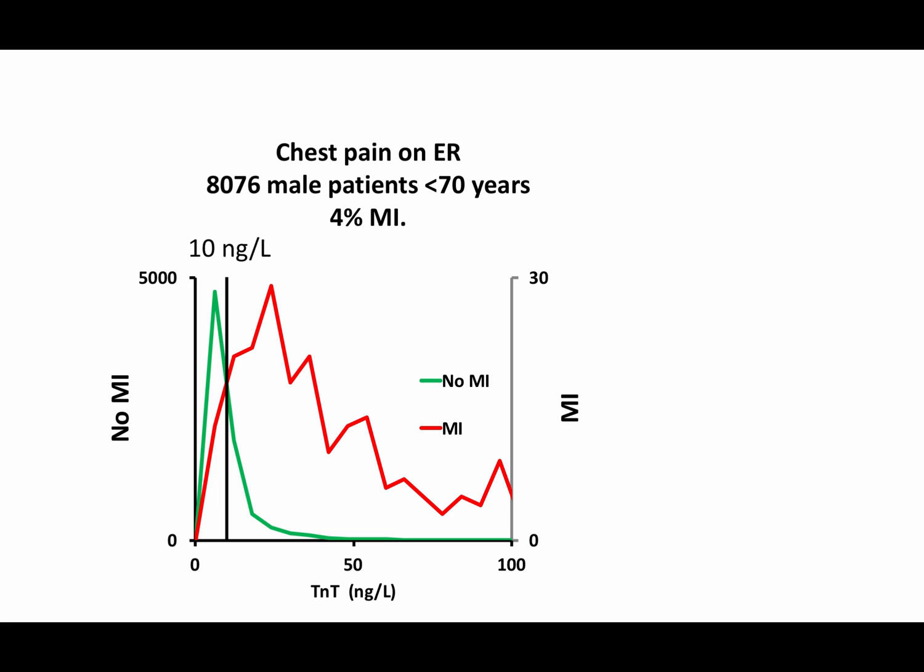The dataset is composed of 8,076 male emergency room patients below 70 years of age with a chief complaint of chest pain and normal kidney function. 4% had myocardial infarction.